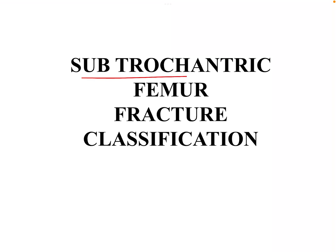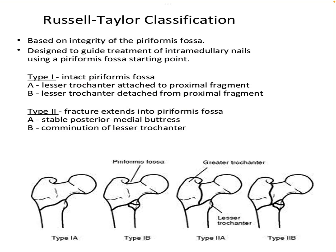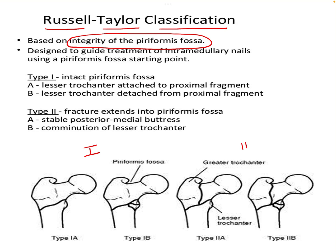In this video we will discuss the subtrochanteric femur fracture classification. We have one classification called the Russell and Taylor classification, which is important for subtrochanteric fractures. It is based upon the integrity of the piriformis fossa. The fracture is divided into Type 1 and Type 2. In Type 1, the piriformis fossa is not involved — the fracture line does not extend into the piriformis fossa.